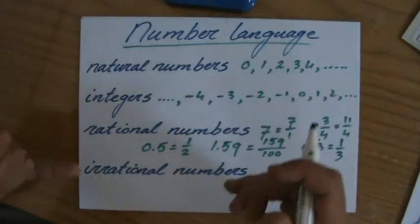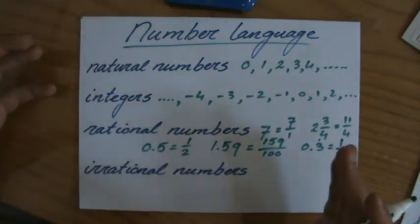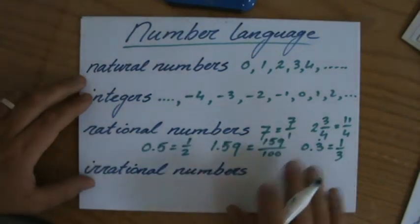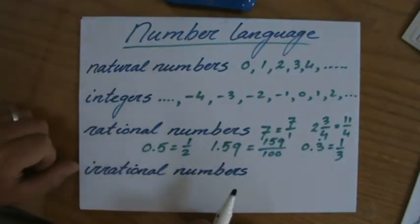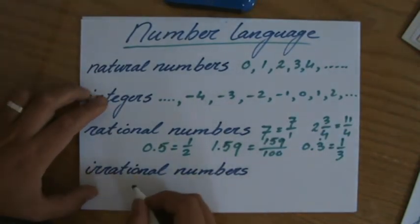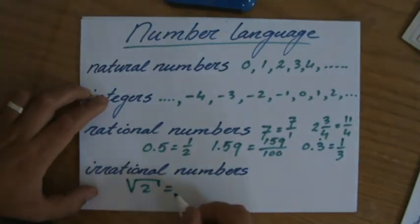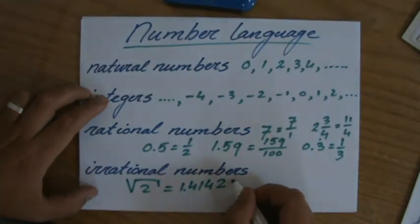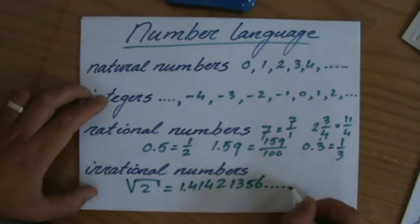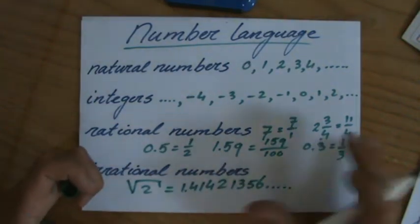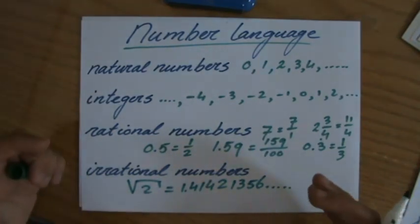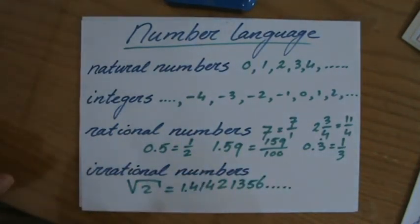Irrational numbers are the other way around. If it's not a terminating decimal and there's no repeating pattern, then it's an irrational number — you cannot write it as a fraction. For instance, if you type the square root of 2 into your calculator, it gives something like 1.41421356, and it goes on and on. There's no pattern, nothing reoccurs, it's not terminating — I cannot capture this exactly in a fraction. That's why we call it an irrational number.